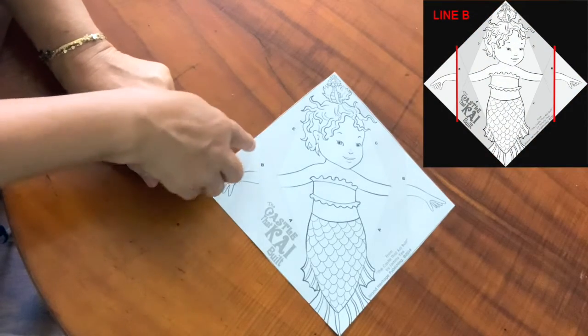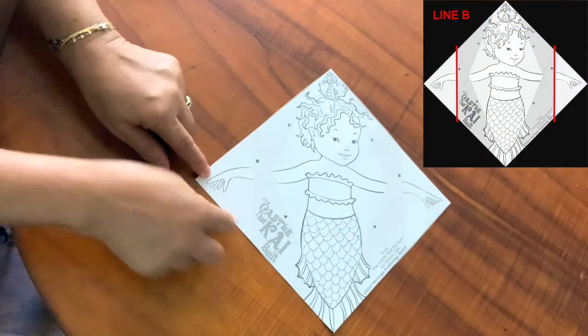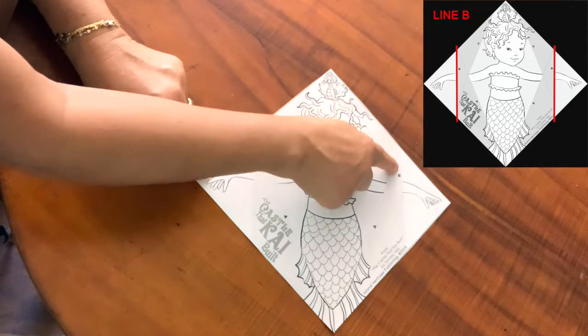Line B goes across her hands on either side. Here's one and here's line B on the other side too.